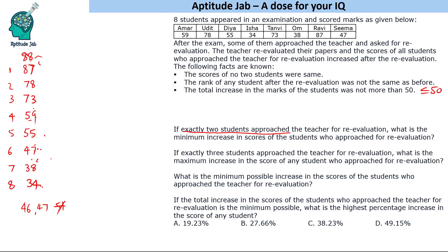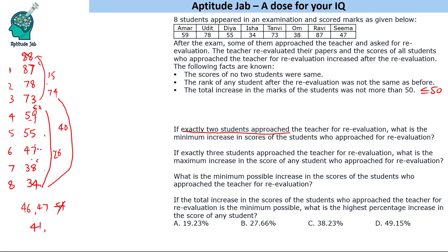If we take the last-place student to 60, the increase is 26, and the second person to 88 gives an increase of 15 — total 41. Logically, the widest gap between the two numbers gives the best scenario. Trying 74 gives increases of 40 and 10, totaling 50 — possible but not the least. The minimum increase is 41.